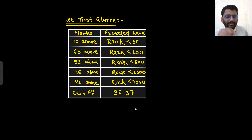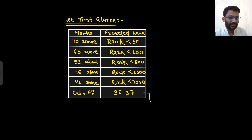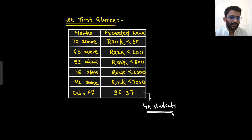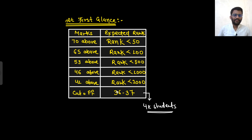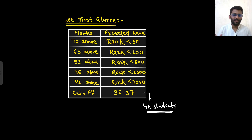For cutoff, I am expecting it to be around 36 to 37, assuming they are qualifying approximately 4,000 students — which is generally how many they qualify in instrumentation. So that is the complete marks versus expected rank analysis.